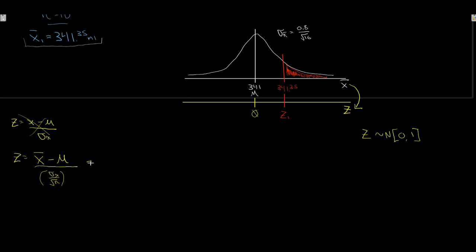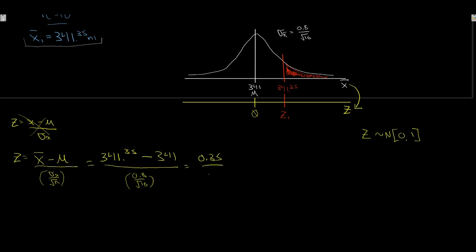Working through this: z equals (341.35 minus 341) all over (0.8 over root 16). In the numerator we get 0.35, and in the denominator we get 0.8 divided by root 16, which gives 0.20. So altogether, 0.35 divided by 0.2 gives us z = 1.75.